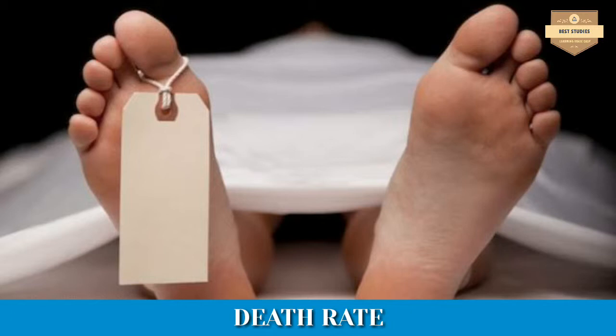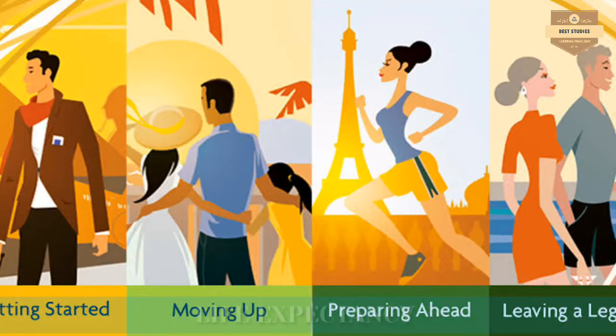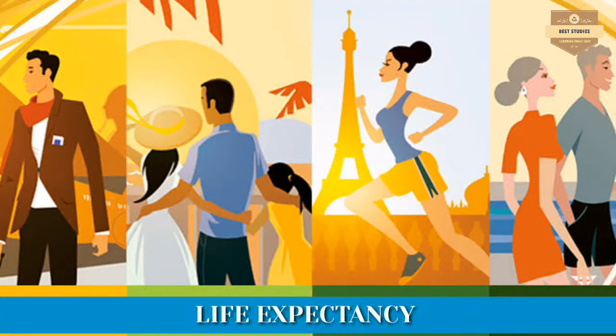Number two, death rate: the number of deaths per 1,000 people in a year shows the death rate. Third, life expectancy: the average lifespan of an individual expected in an area at the time of birth.